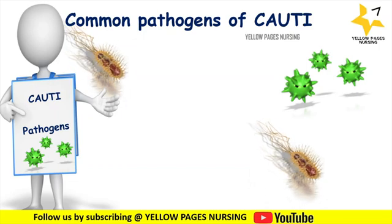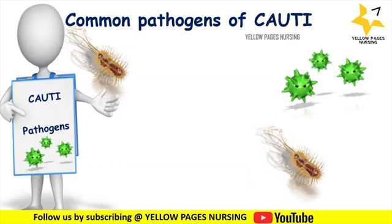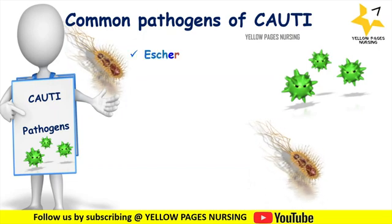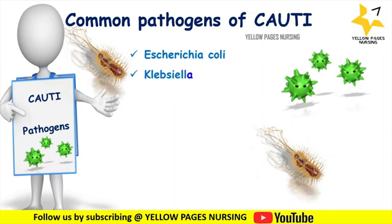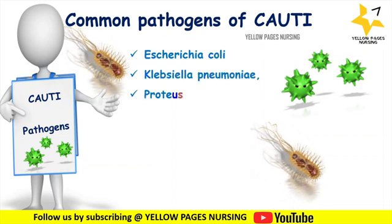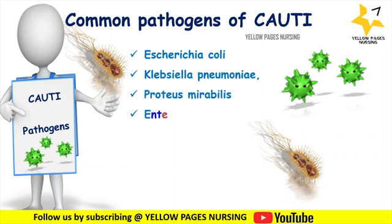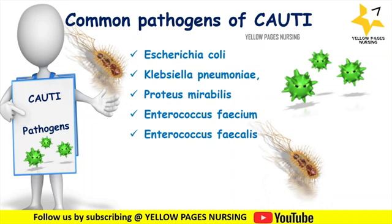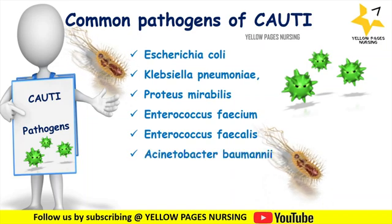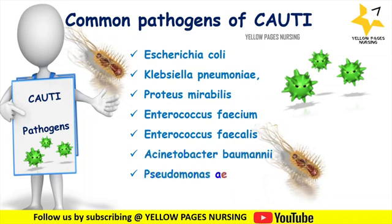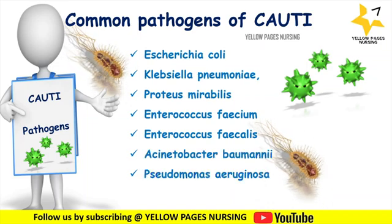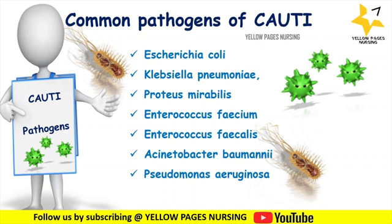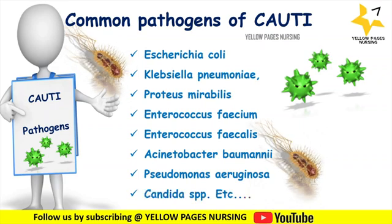Common pathogens that cause catheter-associated urinary tract infections include: Escherichia coli, Klebsiella pneumoniae, Proteus mirabilis, Enterococcus faecium, Enterococcus faecalis, Acinetobacter baumannii, Pseudomonas aeruginosa, and Candida species.